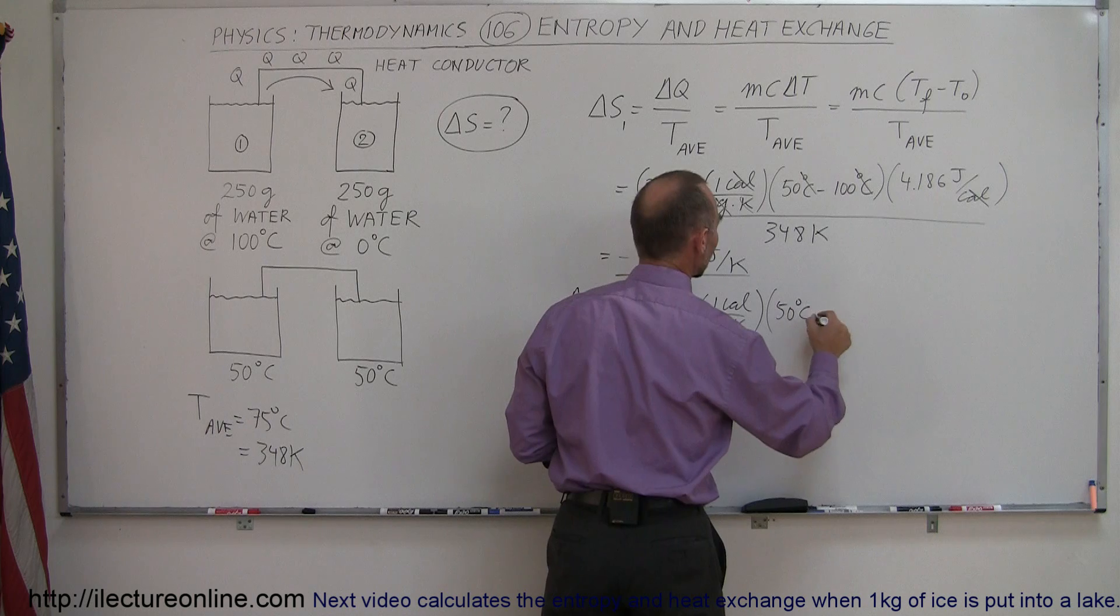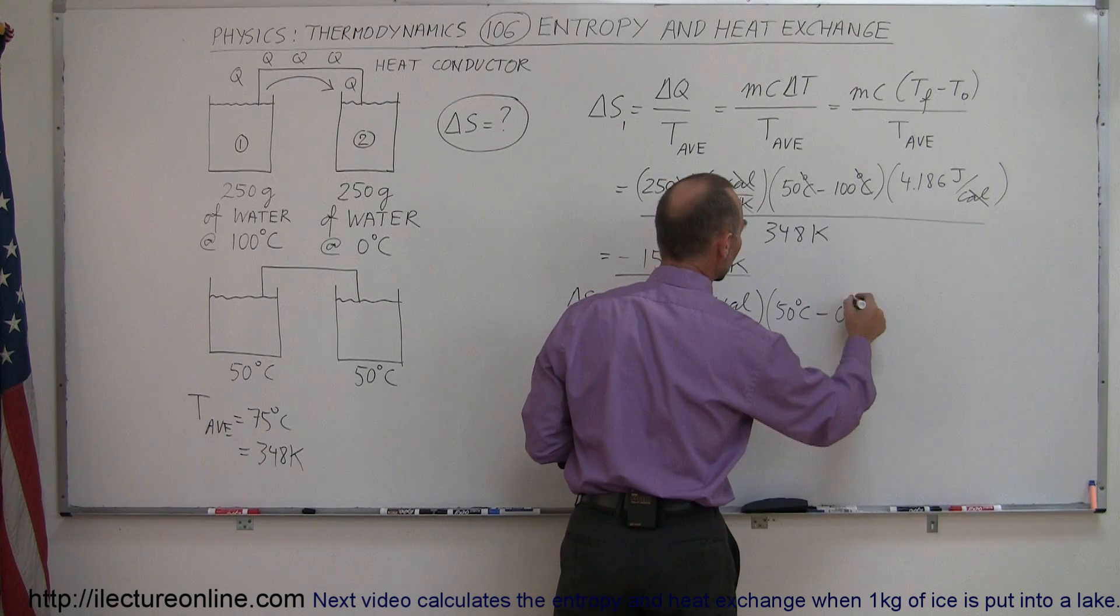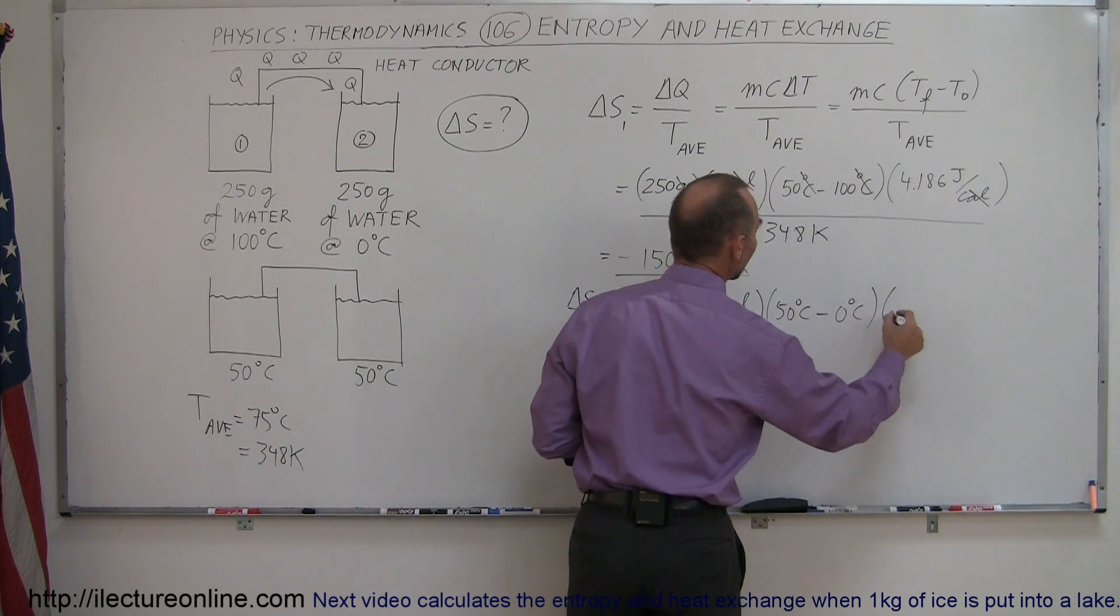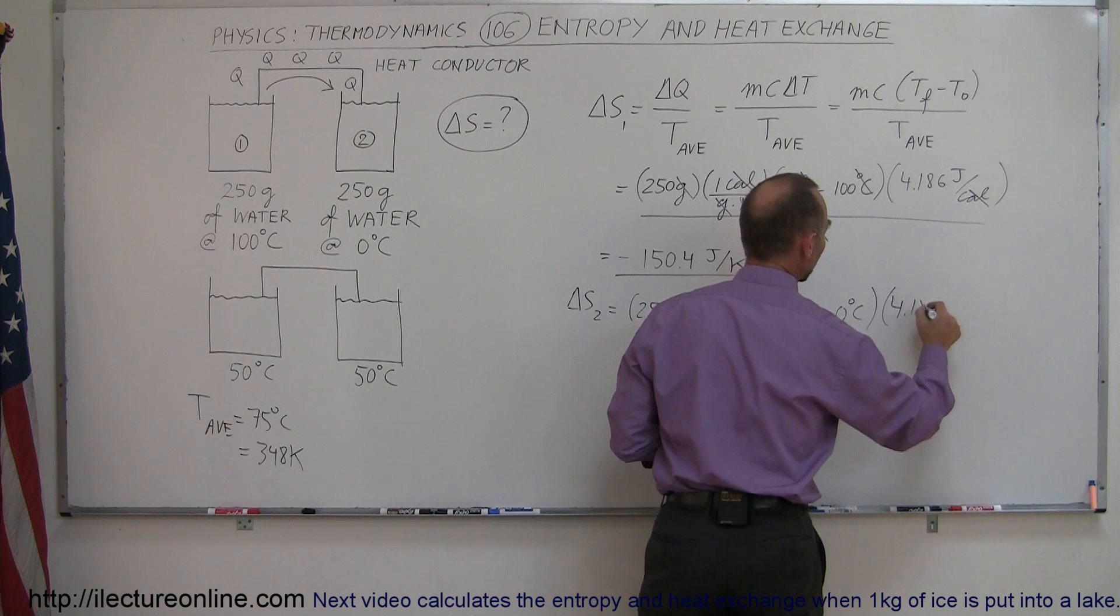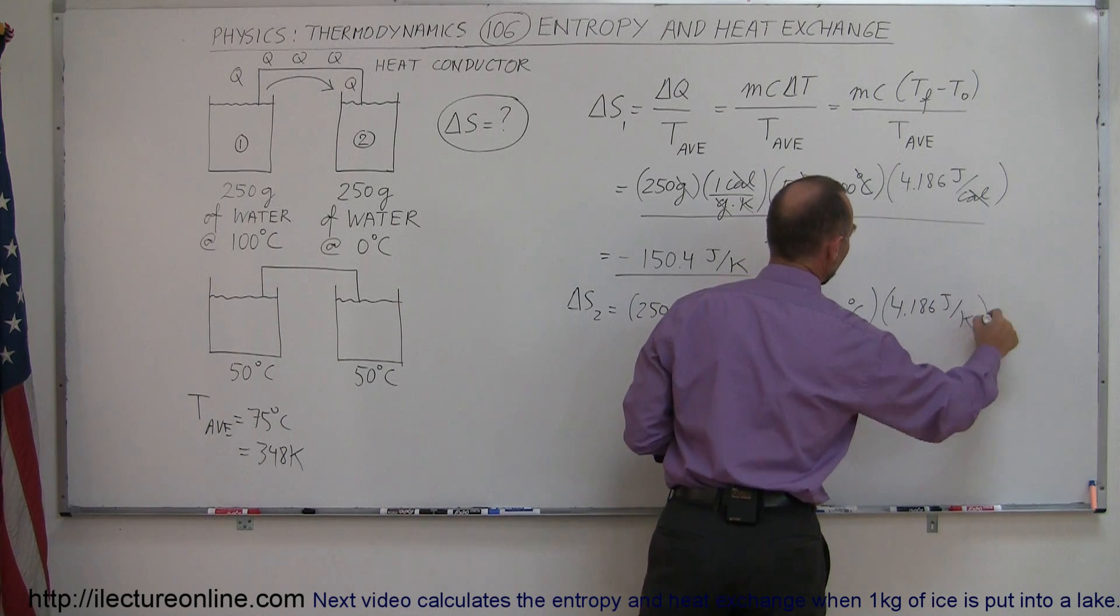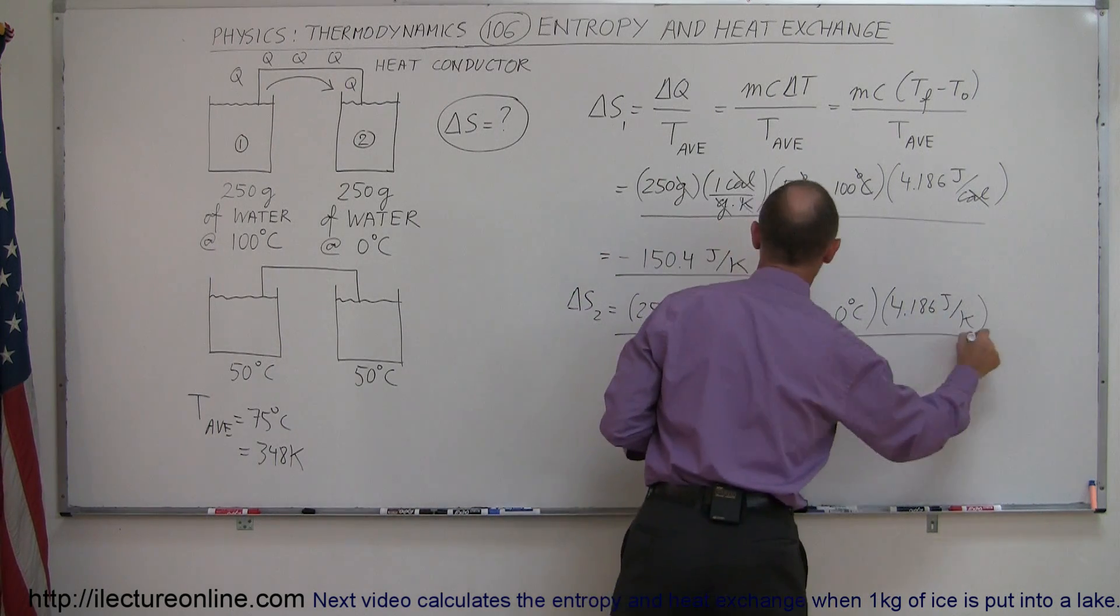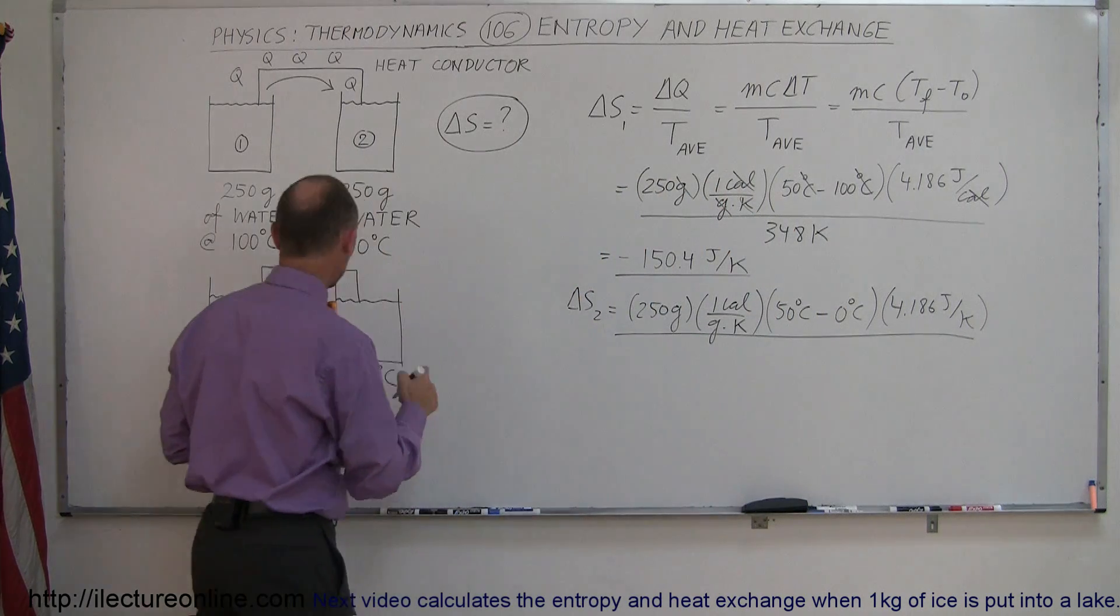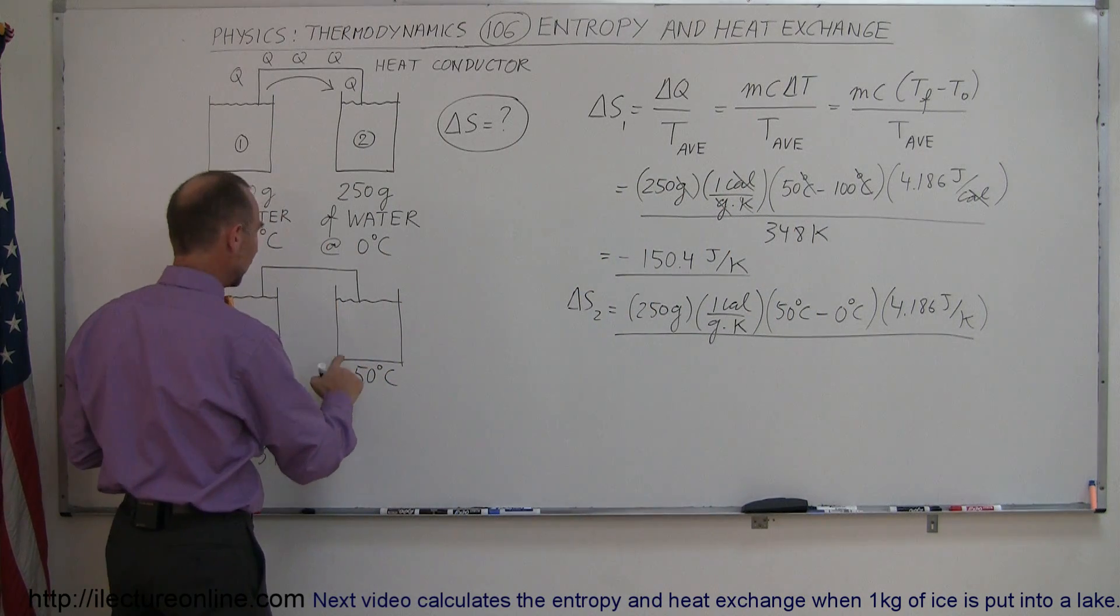The difference now would be final temperature, which is 50 degrees centigrade, minus initial temperature, which is 0 degrees centigrade, times the conversion factor, 4.186 joules per Kelvin.